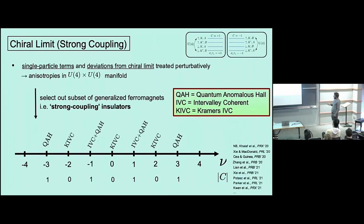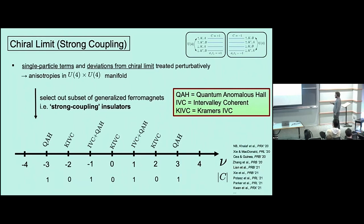At odd integer fillings the situation is different. At ν = ±3 in this chiral limit picture you get quantum anomalous Hall states, and at ν = ±1 you get some combination of IVC and a quantum anomalous Hall state. One particularly strong prediction is a close connection between filling and Chern number: the Chern number equals the filling mod two. So at even integer fillings you get even Chern number — in practice Chern number zero — and at odd integer fillings you get Chern number one.